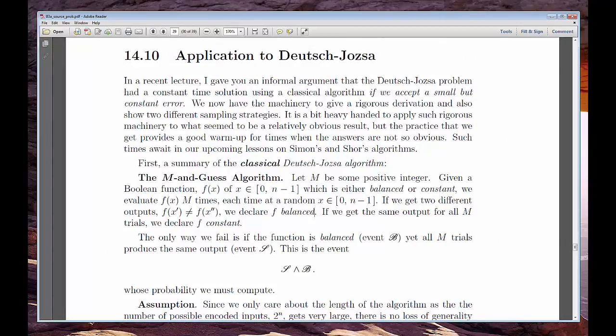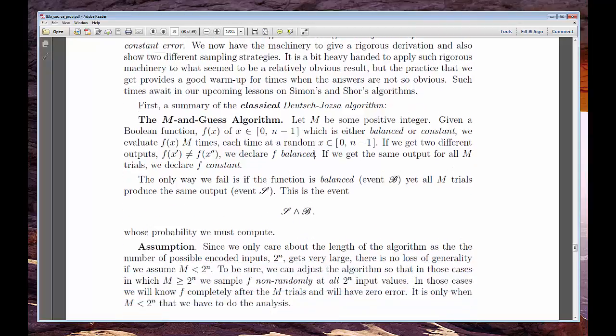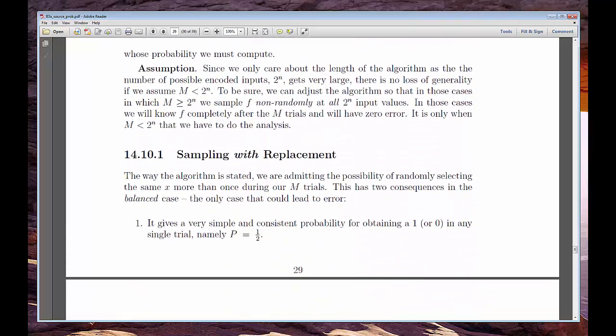When you're reading this chapter, one idea may help put things into perspective. Applying probability to our previous algorithms, like Deutsch-Josza, is done just so we can know about the classical time complexity. The quantum algorithm always completes in a single pass of the circuit.